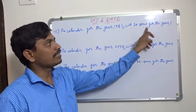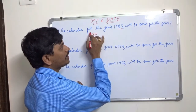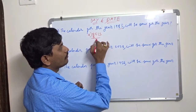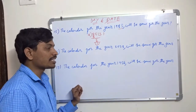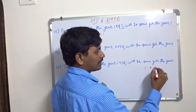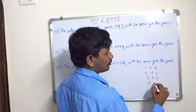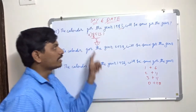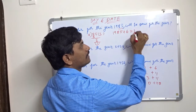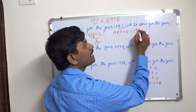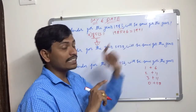Another example: the calendar for 1985 will be same for which year? Take last two digits: 85 divided by 4 — 4 × 21 = 84, remainder is 1. If remainder is 1, we add 6 years. So 1985 + 6 = 1991. The calendar year for 1985 and 1991 will be the same.